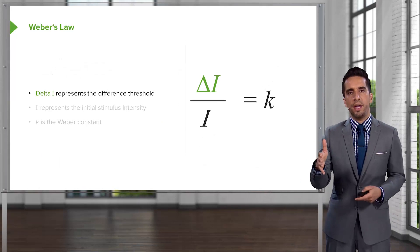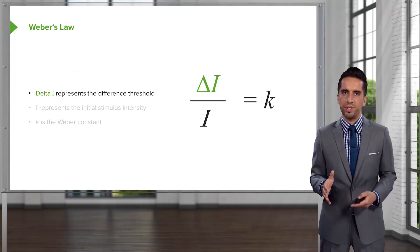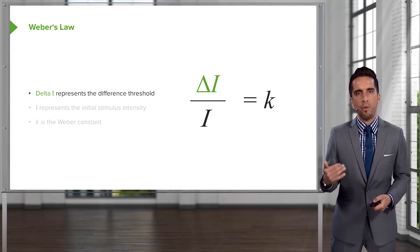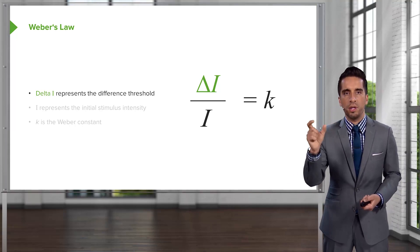So, this is an equation that is for sure going to show up on the MCAT. So, we should know this. And this is Weber's Law. And we're going to walk through the three components. So, delta I represents the difference threshold, so the JND. This means the difference from your stimulus.